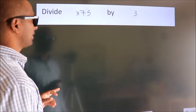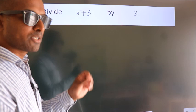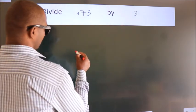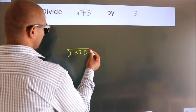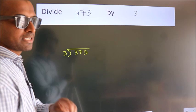Divide 375 by 3. To do this division, we should frame it in this way. 375 here, 3 here. This is your step 1.